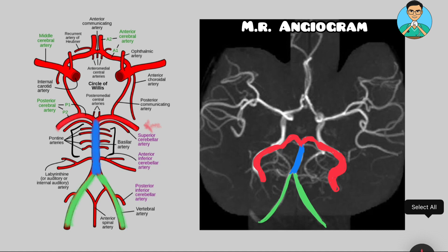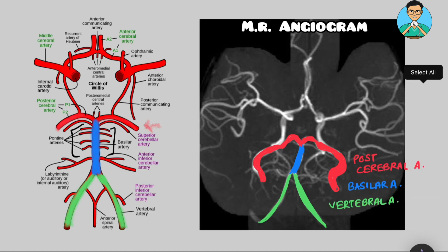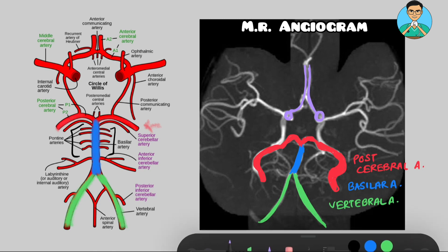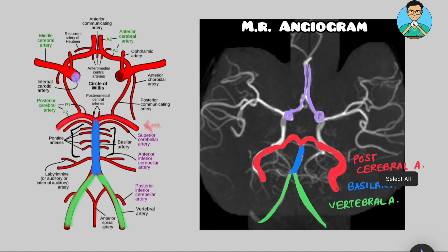Now this makes up the posterior system. The anterior system starts with the two internal carotid arteries, which open in the brain somewhere over here, and this gives off the anterior cerebral artery that you can see over here. In the schematic, this opening is the opening of the internal carotid artery, and that gives off the anterior cerebral artery.